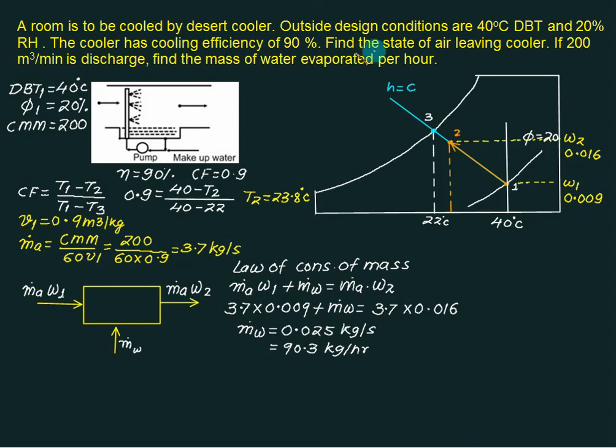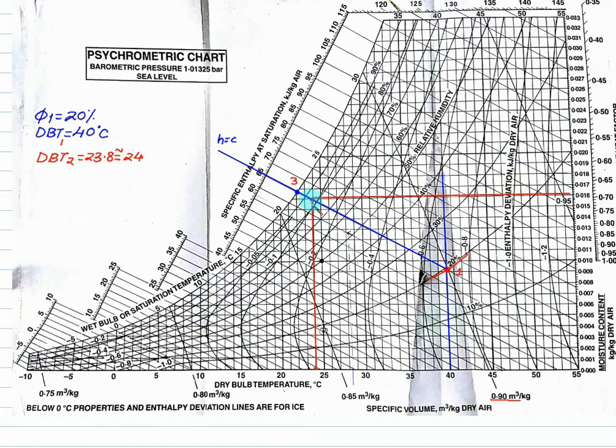And if you want to find out the state of air leaving this one, the state of air is given by the dry bulb temperature equals to 24 approximately. And we can find out the value of phi also at this point. So we will go to the graph. So this one is our point number 2.